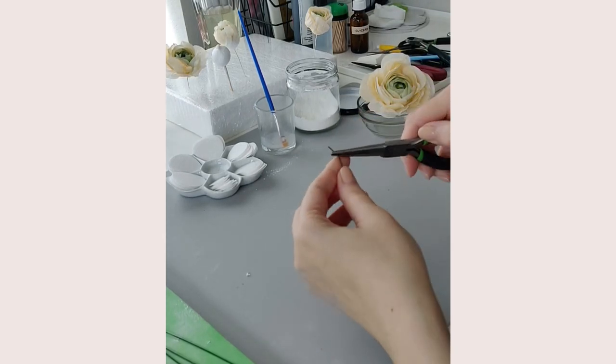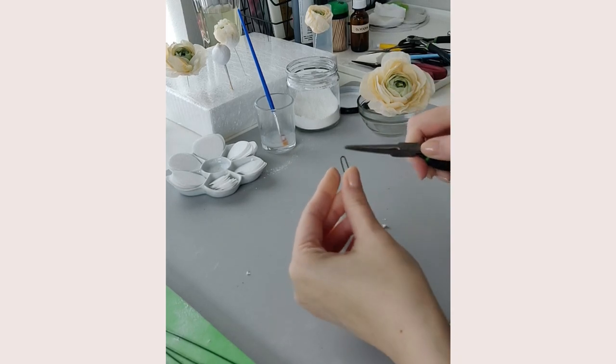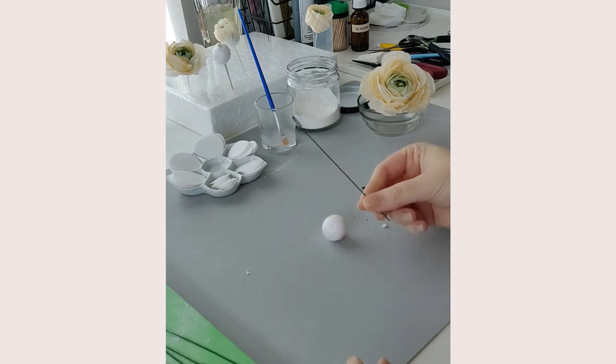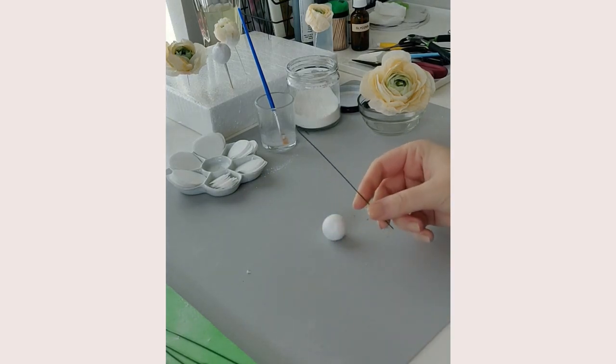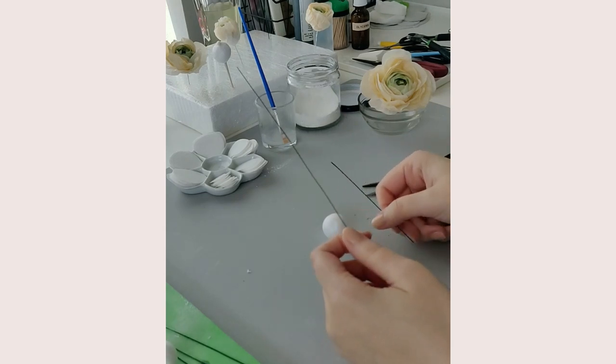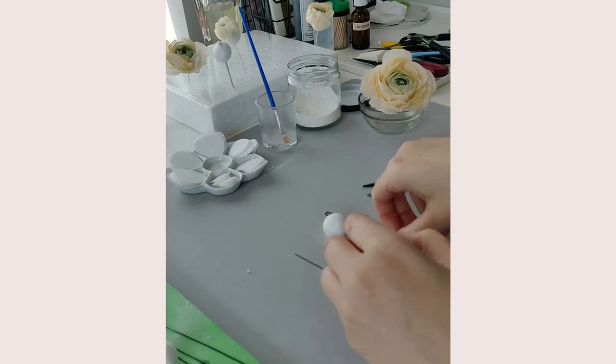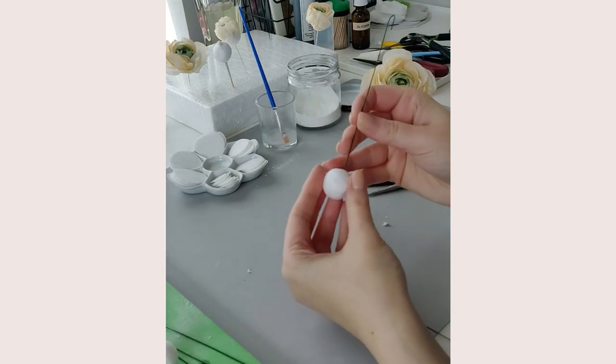This is half of about six inches, and another six inches of 28 or 26 gauge wire. So first step I'm going to do is I'm going to poke a hole through my styrofoam.